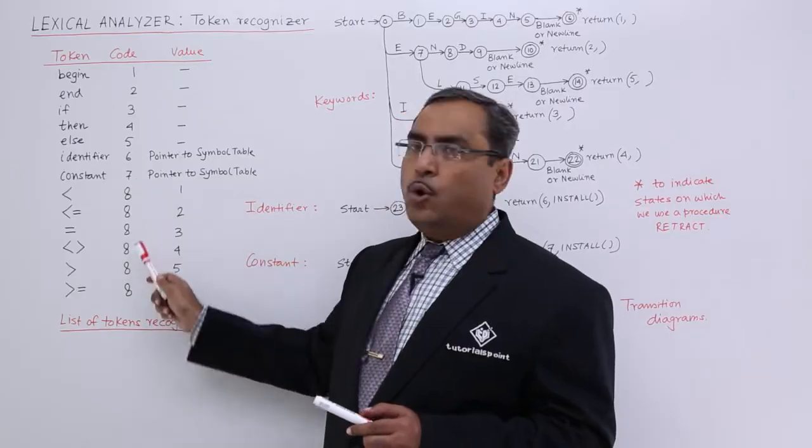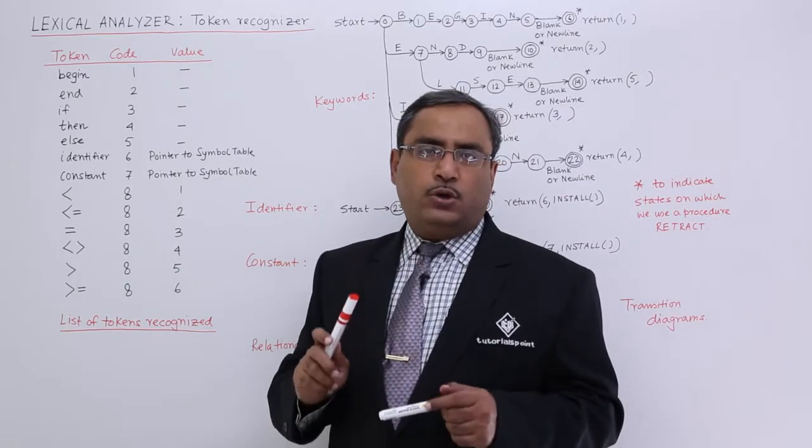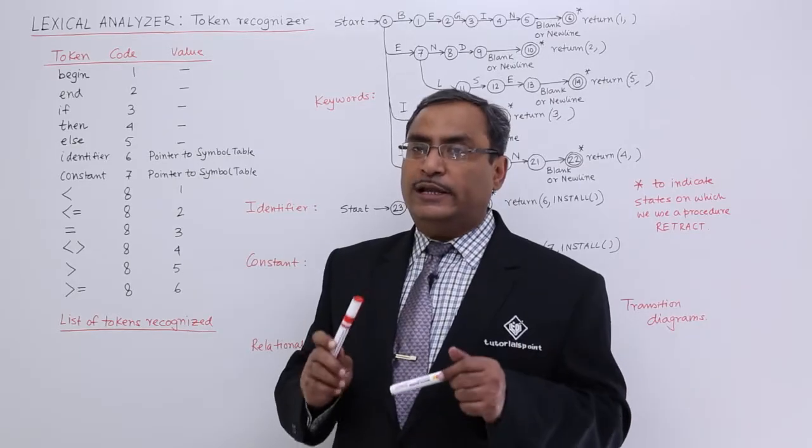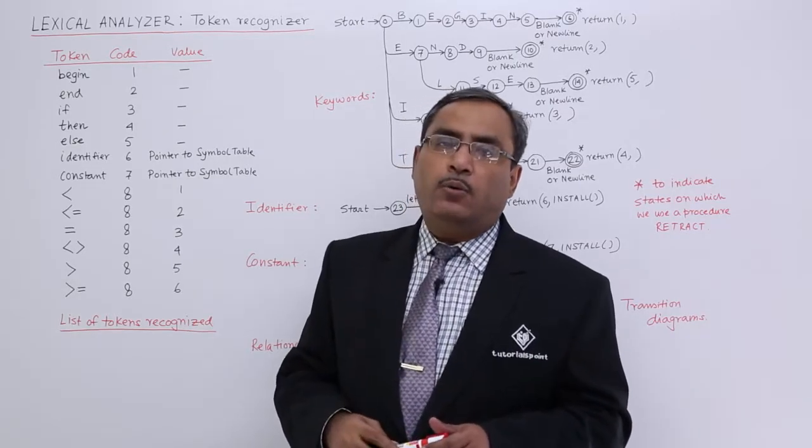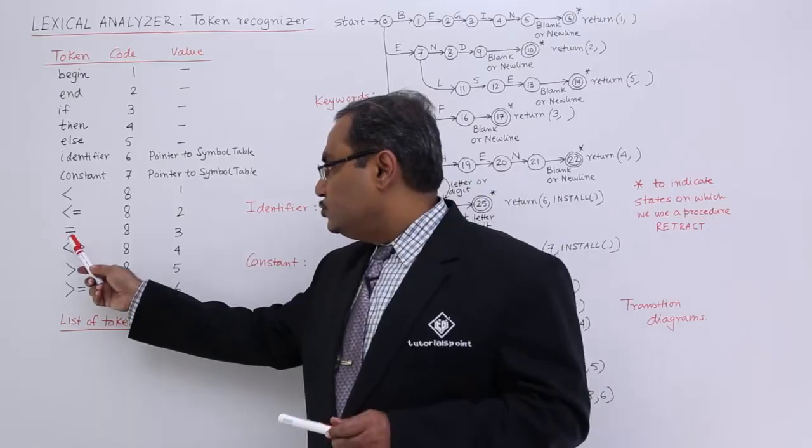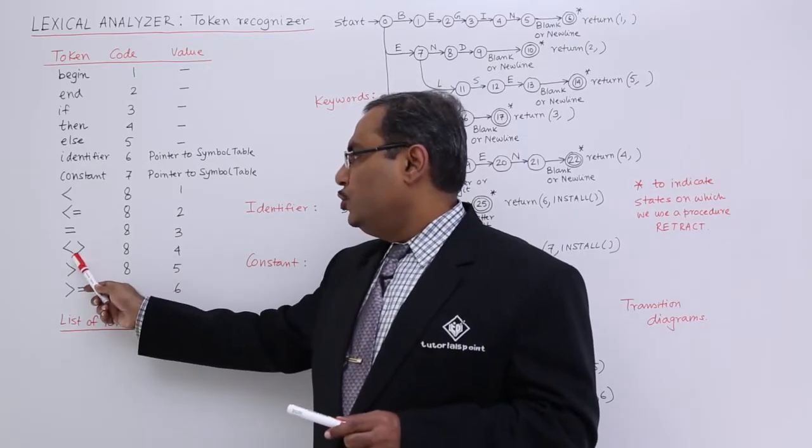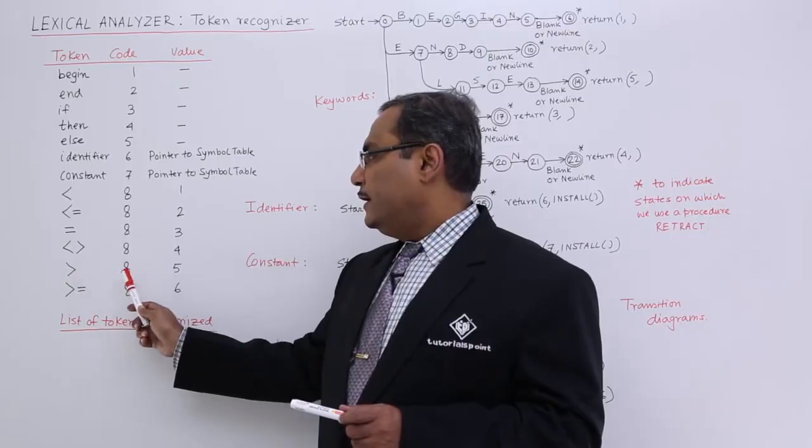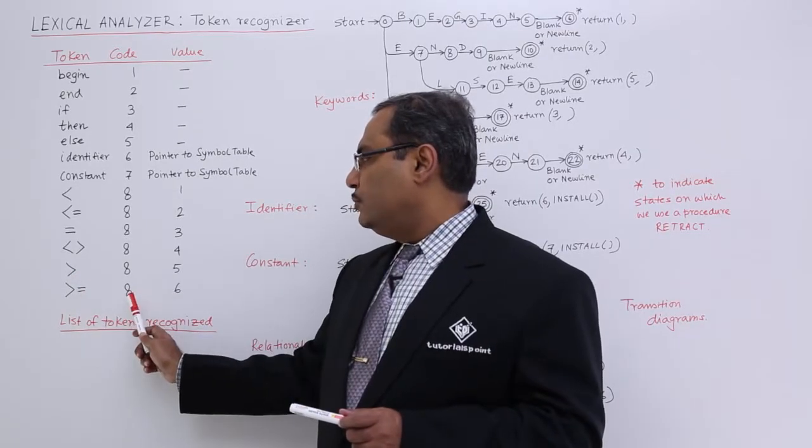Whenever I am getting 8 as code, then it indicates that the recognized token is a relational operator. Equal to 8.3, not equal to 8.4, greater than 8.5, greater than equal to 8.6.